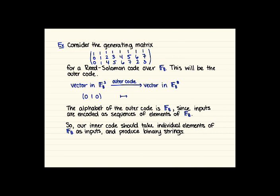So we've got a vector with eight entries, each of which is in F8. For example, if we're encoding (0,1,0), then we get that second row there: 0,1,2,3,4,5,6,7. So that would be applying the outer code.